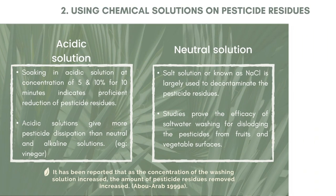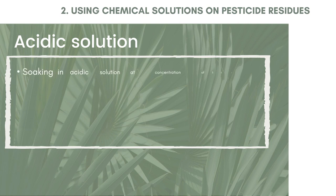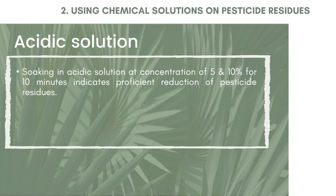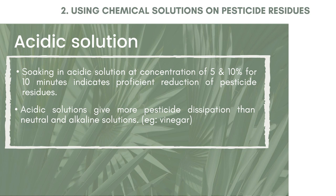Secondly, using a chemical solution on pesticide residue. We have two different solutions. First, acidic solution — soaking in acidic solution at a concentration of 5% and 10% for 10 minutes indicates a proficient reduction of pesticide residue. Acetic solution gives more pesticide dissipation than neutral and alkaline solutions. An example of an acidic solution is vinegar.